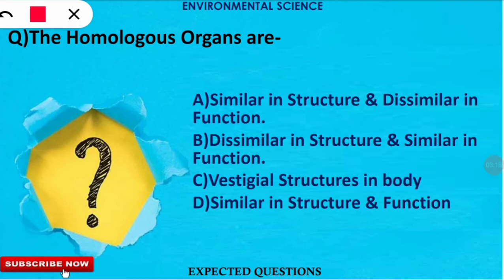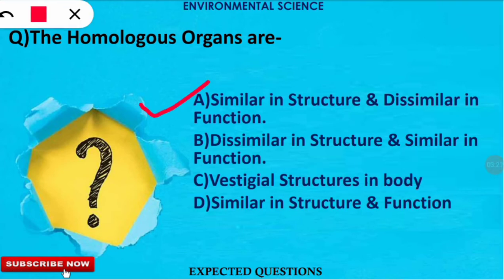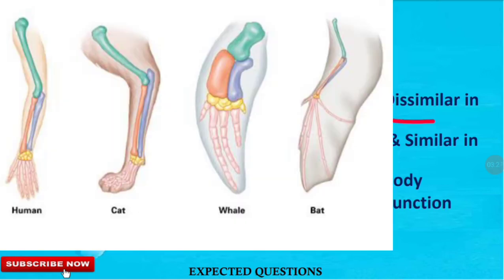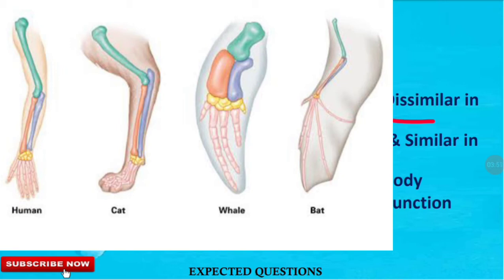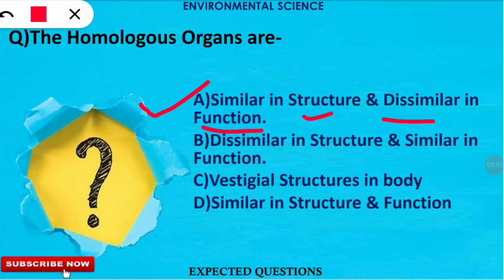The next question is: homologous organs are what kind? The correct option is option A — homologous organs are similar in structure but dissimilar in function. As shown in the picture, the forelimb is the example: in land animals it is used for walking, in birds for flying, and in whales and other aquatic animals for swimming. The structure is similar but the function differs across organisms.